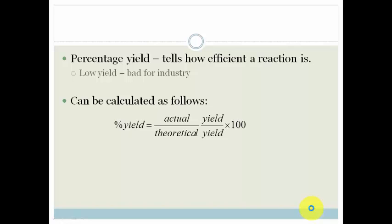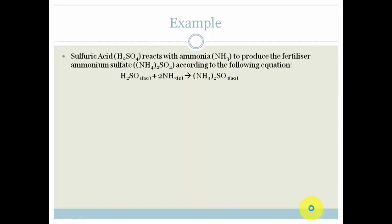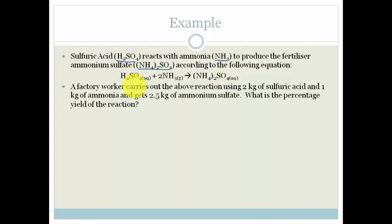Let's look at an example. Sulfuric acid H₂SO₄ reacts with ammonia NH₃ to produce the fertilizer ammonium sulfate (NH₄)₂SO₄ according to the following equation. A factory worker carries out the above reaction using 2 kg of sulfuric acid, 1 kg ammonia, and gets out 2.5 kg of ammonium sulfate. What is the percentage yield of this reaction?